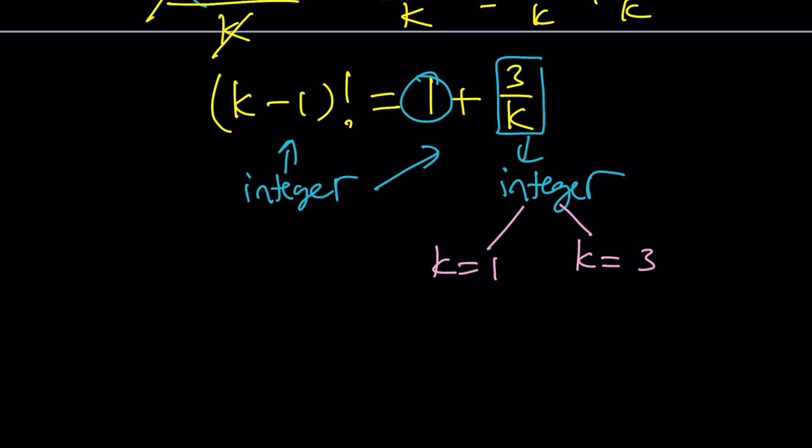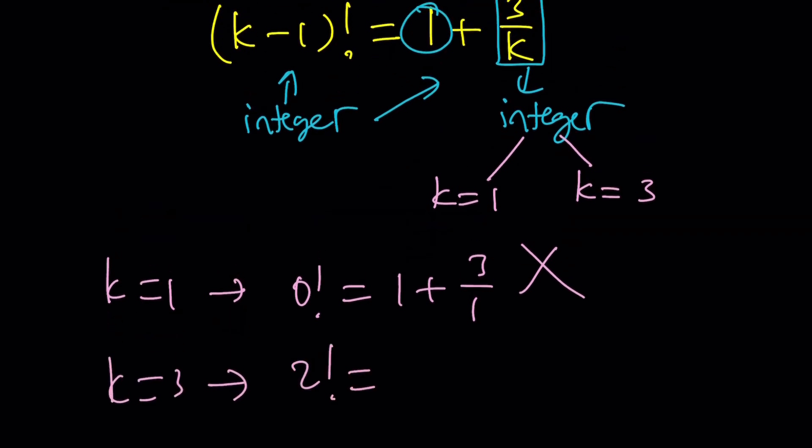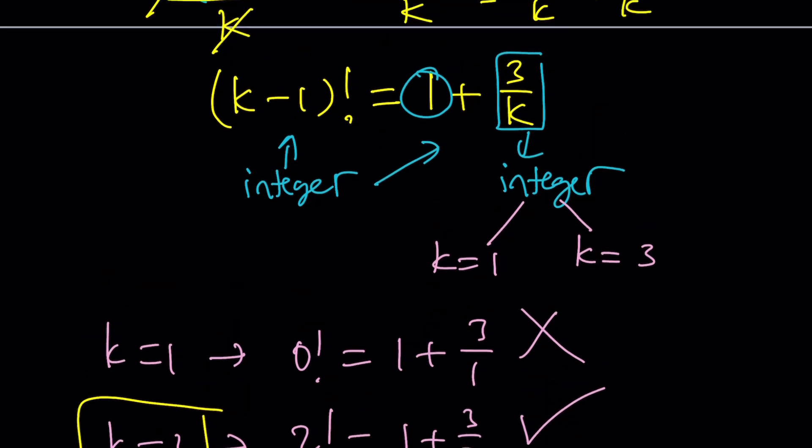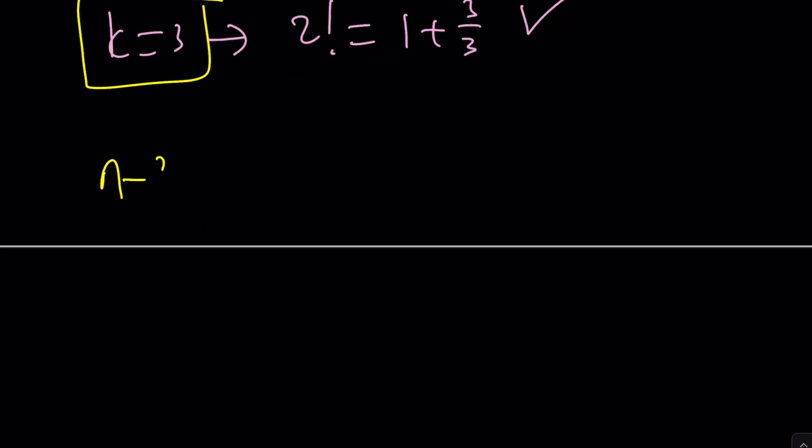We're going to go ahead and test it out. If k is equal to 1, then we get 0 factorial equals 1 plus 3 over 1. This is definitely false because 1 plus 3 is 4. 4 is not equal to 0 factorial. But what if k is equal to 3? Then we get 2 factorial equals 1 plus 3 over 3. 3 over 3 is 1. 1 plus 1 is 2. 2 factorial equals 2. Yay! We have a match. We have a solution. But wait a minute. We're not looking for k. We're looking for n. But n minus 2 equals k. So, that means n is equal to 5.